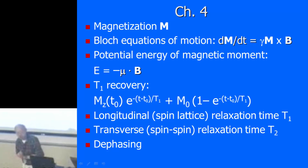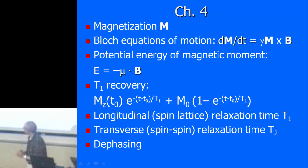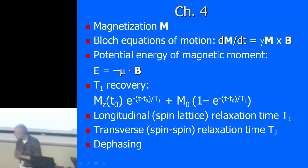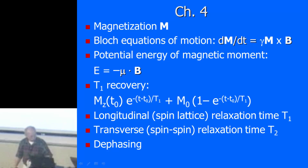You might say the Bloch equation looks the same — yes, it is. We'll also talk about potential energy, T1 — the longitudinal spin-lattice relaxation time — and T2, which we call the transverse spin-spin relaxation time. And there's a terminology I discovered from the textbook: dephasing. I just have to explain that.